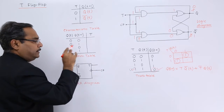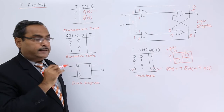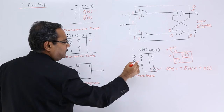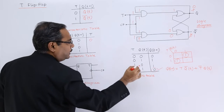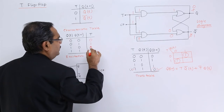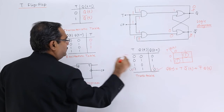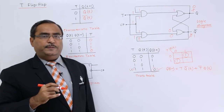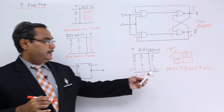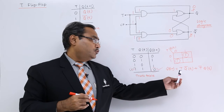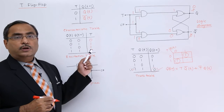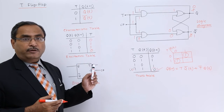Now I am going for the excitation table. From a 0 to 0 transition, we require T=0. For a 0 to 1 transition, we need T=1. For 1 to 0, T=1, and for 1 to 1, T=0. You can find here the logic is actually XOR logic — it is nothing but T = Q(t+1) XOR Qt. You are also getting this XOR-type truth table for the excitation table of T flip-flop.